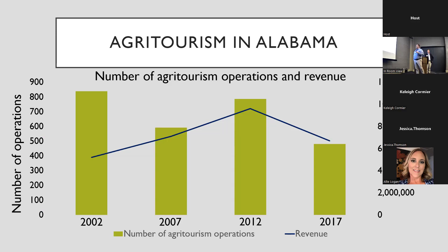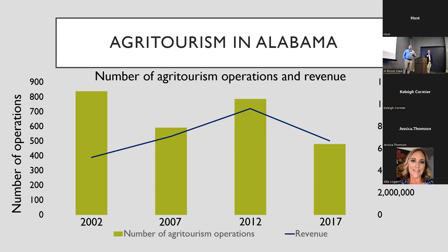Looking at Alabama agritourism revenue in a longevity study starting in 2002, we see a peak in 2012 with a substantial dip afterward. One factor causing this decline is weather — Alabama does live in hurricane alley, and between 2012 and 2017, weather would have played a very hard role. Heavy rains and wind remain an issue across the state.